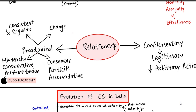Democracy में required है consensus, participation और accommodation। Democracy consensus building पर काम करती है - लोगों को policies के बारे में aware करो, बताओ कि हम यह implement क्यों करना चाहते हैं। जब लोगों में consensus develop होगा तो participation मिलेगा। जब तक public participate नहीं करेगी, किसी भी policy को efficiently implement नहीं करवाया जा सकता।